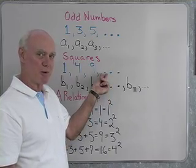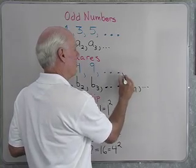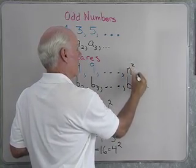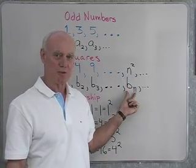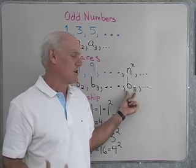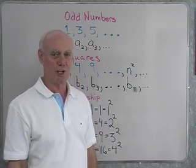So it must make sense that B sub n, then, would be n squared. So now I've got a way to write any term in the sequence of squares. I say if B sub n is the nth term in the sequence of squares, it must be equal to n squared.